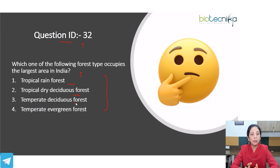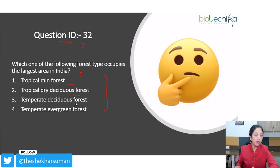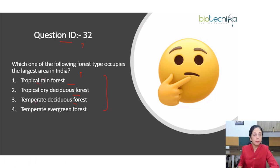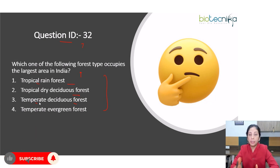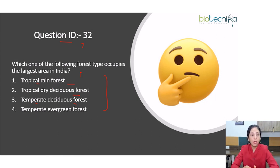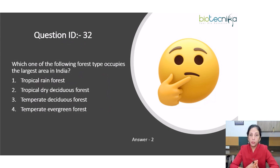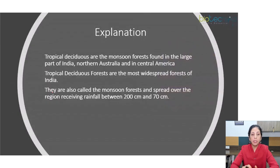This question has been asked from biogeography and is based on biomes. As we know, we can divide forest into three types: tropical, temperate, and boreal forest. Further, tropical includes tropical rainforest and tropical deciduous forest; likewise, we have temperate rainforest and temperate deciduous forest. The right option should be option 2, that is, tropical dry deciduous forest.